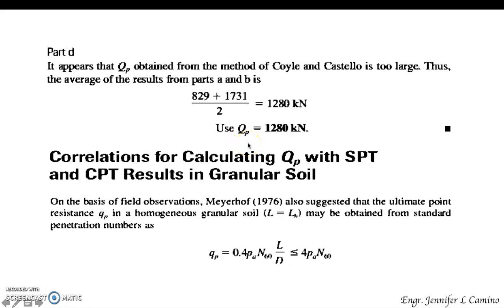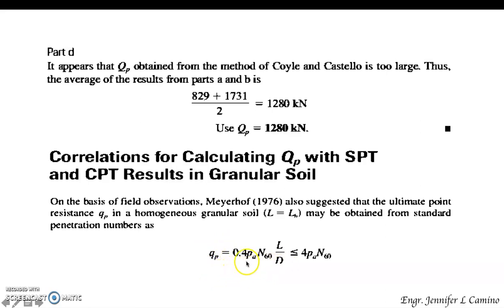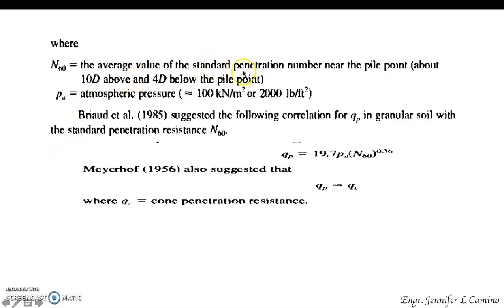We move on to correlations for calculating Q sub P using standard penetration test and cone penetration test results in granular soil. According to Meyerhof, the ultimate point resistance Q sub P in a homogeneous granular soil may be obtained from the standard penetration number N sub 60. Q sub P is given by this equation and must be less than or equal to a limiting expression. N sub 60 is the average standard penetration number near the pile point, and P sub A is atmospheric pressure.